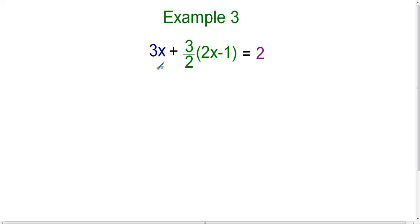Now I have the terms color-coded, so 3x is one term, separated by the plus sign, 3 halves times the quantity 2x minus 1 is the second term, and then separated by the equal sign is our answer, which is our third term.